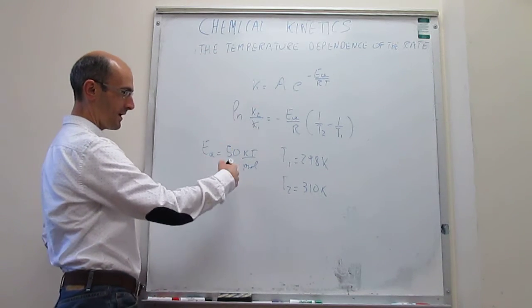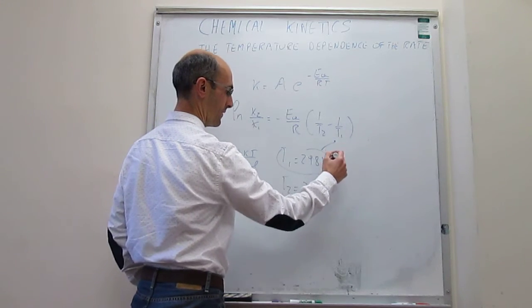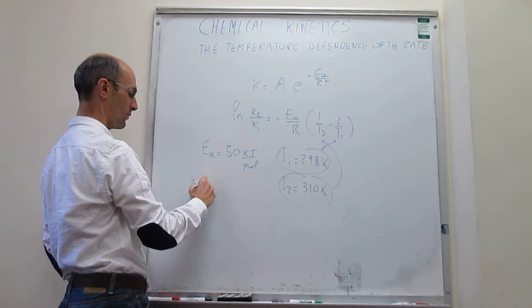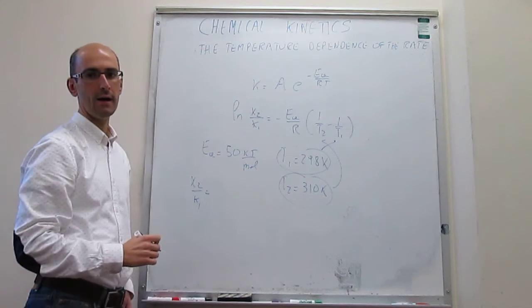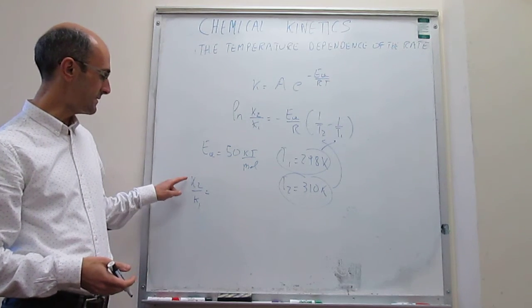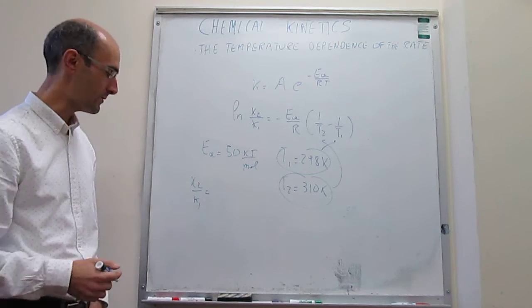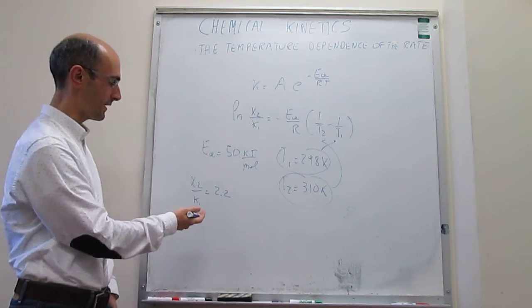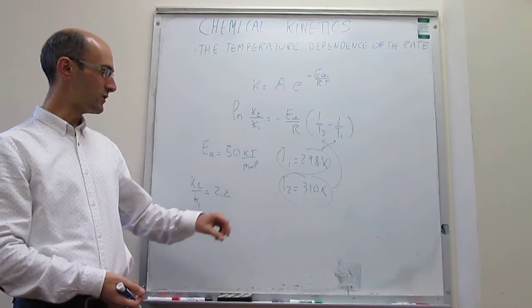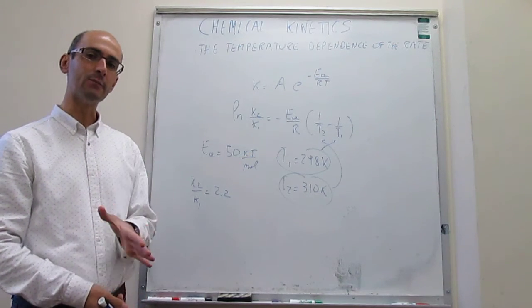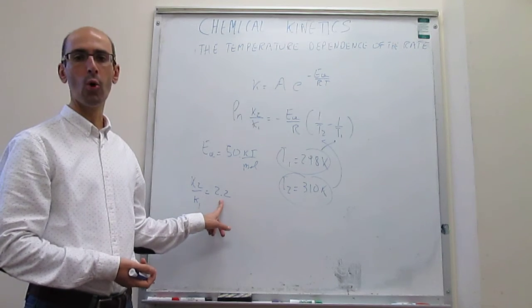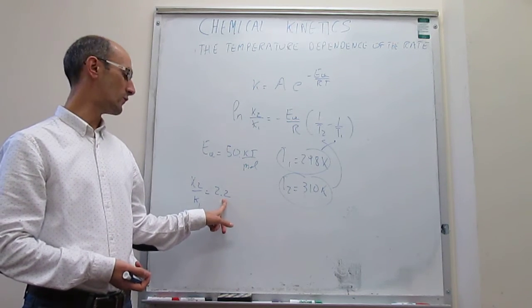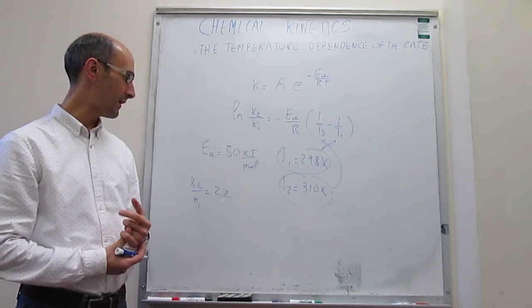So you plug in T1, T2, and the activation energy into the equation, and you can come up with the K2 over K1 ratio, which tells you how much larger the rate constant at physiological temperature is with respect to room temperature. This number happens to be 2.2 — with two significant figures. That tells you that in just a 12 degree Kelvin change, a very, very small increase in temperature, the rate constant — and therefore the rate — more than doubles. There is a huge change to the rate constant for such a slight change in temperature.